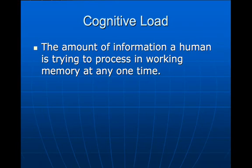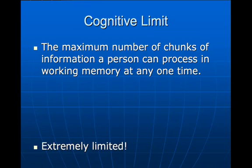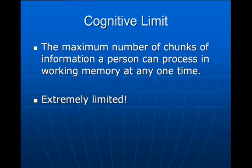We're going to start cognitive load theory by talking about cognitive load and cognitive limit and differentiating between the two. Cognitive load is the amount of information a human is trying to process in working memory at any one time. This is basically how hard you're thinking. Cognitive limit is the maximum number of chunks of information a person can process in working memory at any one time, and that happens to be extremely limited.